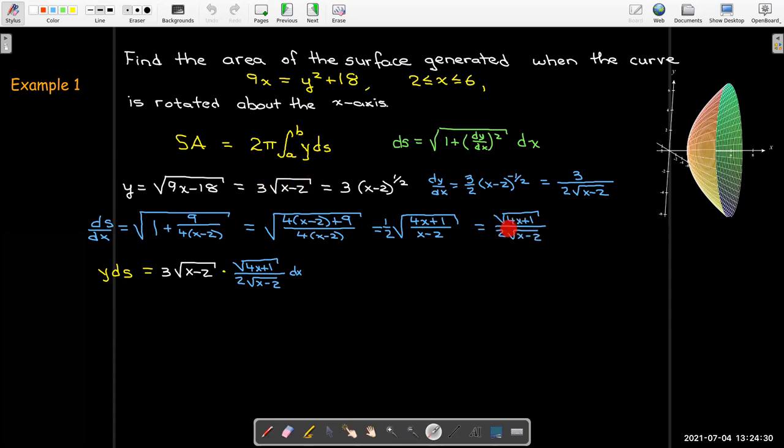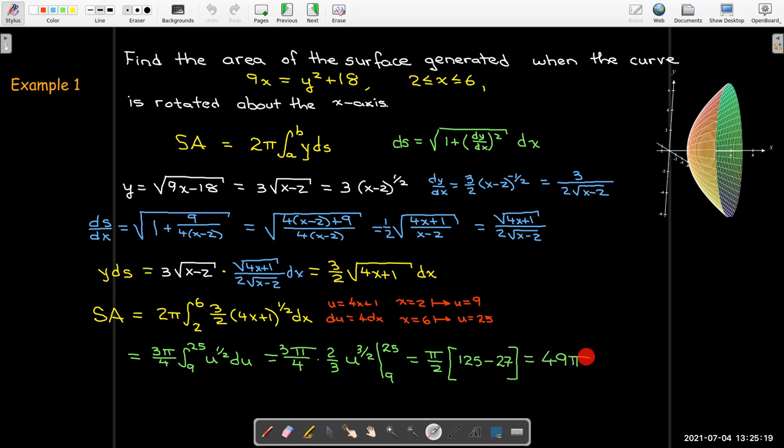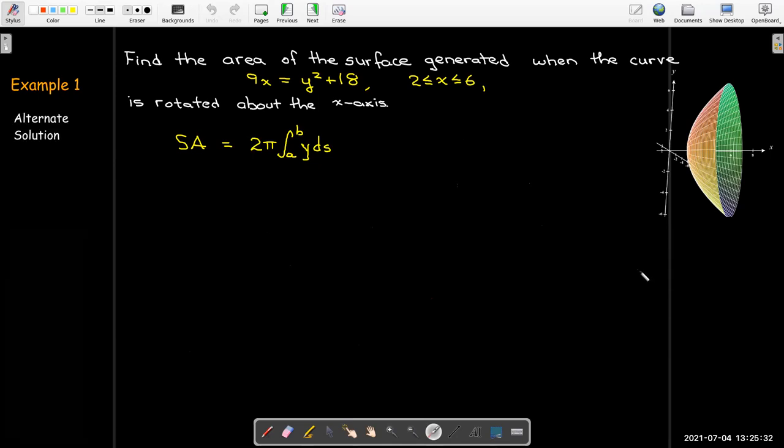That's not too bad. My bounds on x go from 2 to 6, so at least that part is simple. I can evaluate this integral by making a u-substitution. I'll change my bounds into terms of u. Then integrate using the power rule and evaluate between my new bounds. Working out the algebra, I get 49π for the surface area of this parabolic dish.